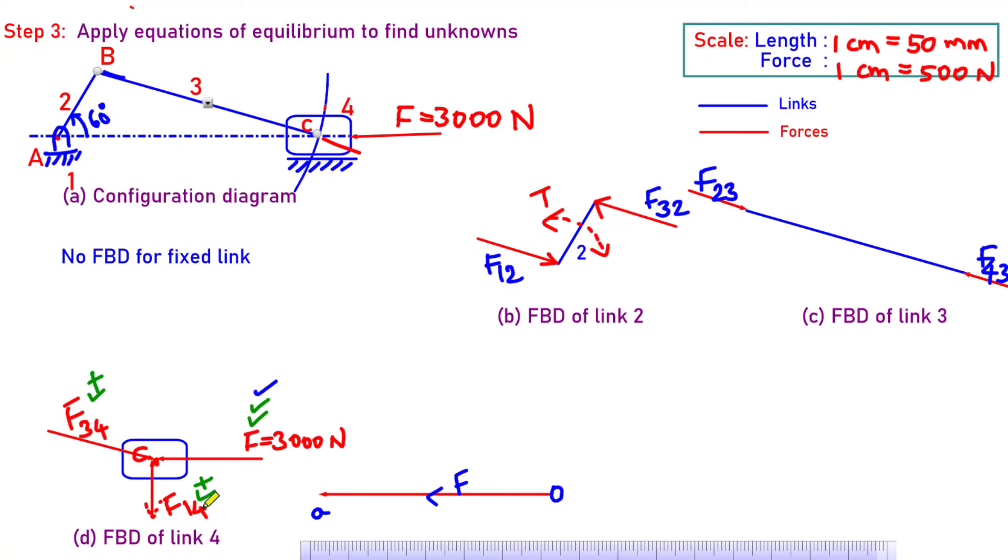I can take F34 or F14. Let me take F14. Do I know the direction? Yes. Magnitude? No. So simply I draw a line to some approximate length.